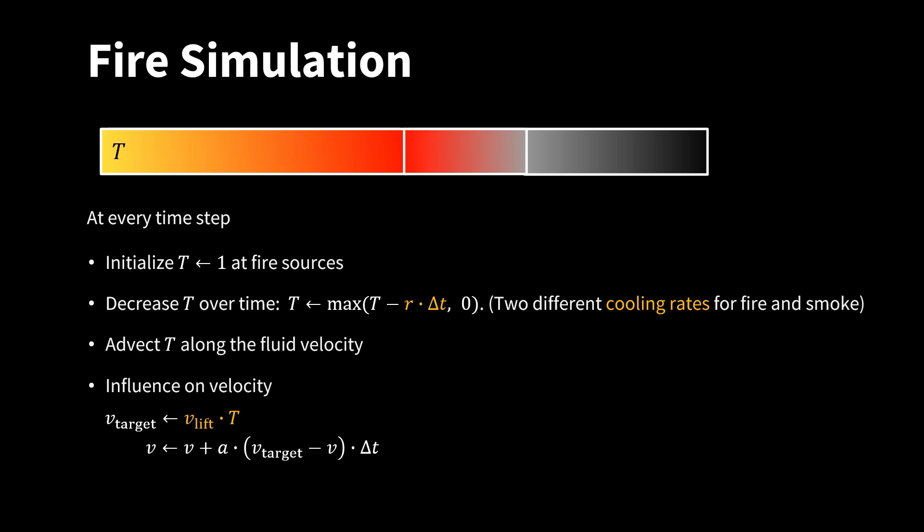The temperature field has an influence on the velocities in the grid. We first compute an upwards target velocity v target. This is v lift times T. v lift is a parameter. As you can see, the target velocity increases with T. Once you have the target velocity v target, we drive the current velocity v towards this target velocity. Here we use an acceleration a. So we have two parameters to tune: V lift and the acceleration a.